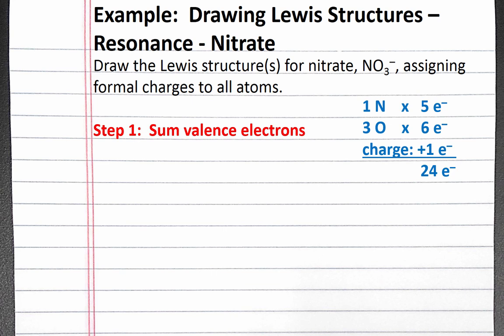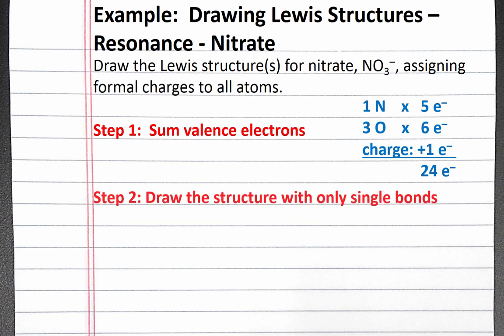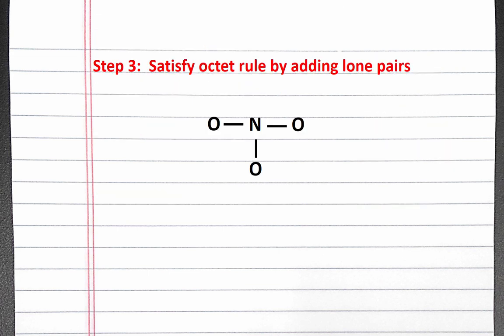Next, we'll draw the structure with only single bonds. Nitrogen is the central atom, and our three oxygen atoms are peripheral atoms. Creating these three bonds has used up six electrons, so we have 18 valence electrons left.